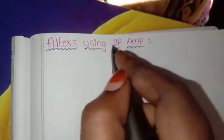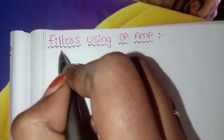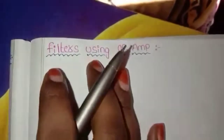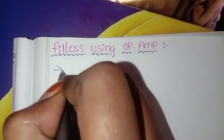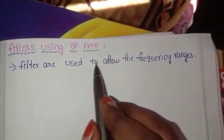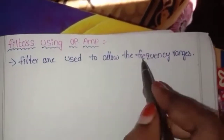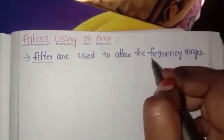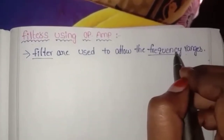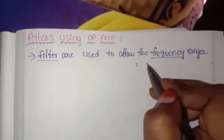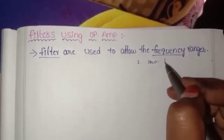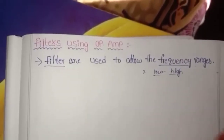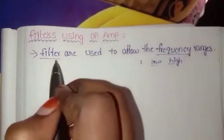Filters are defined by a frequency range. The filter passes a certain frequency range. What types of filters are defined by frequency range? Two types: low frequency and high frequency.